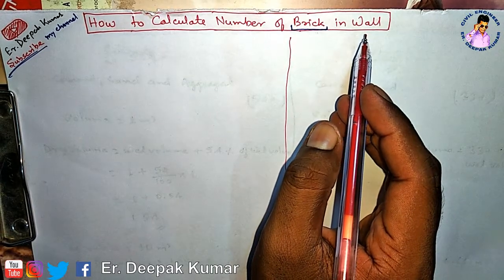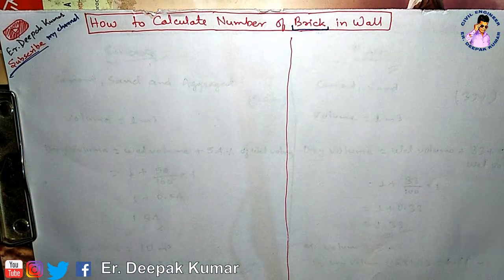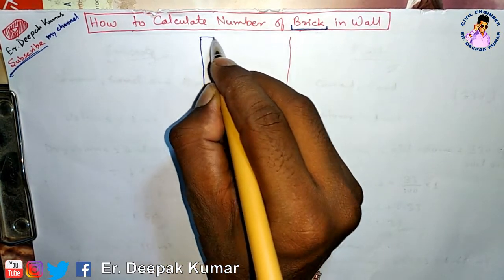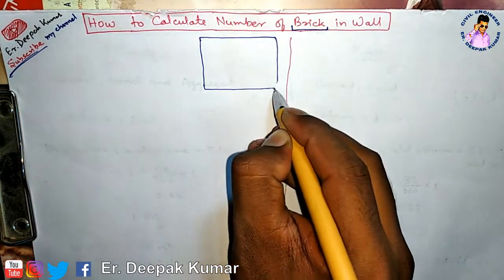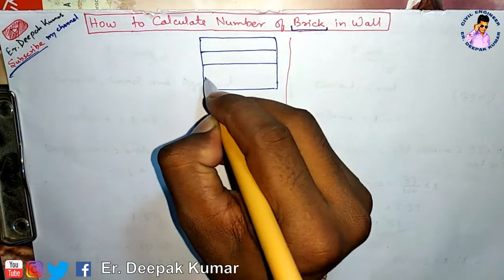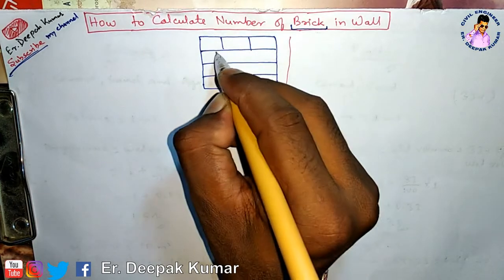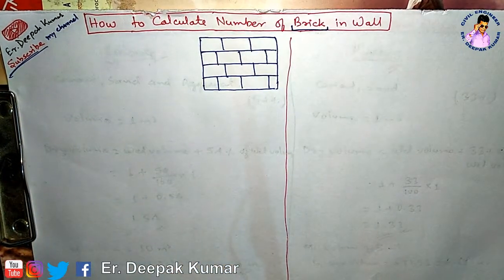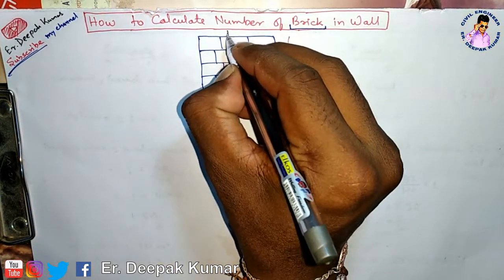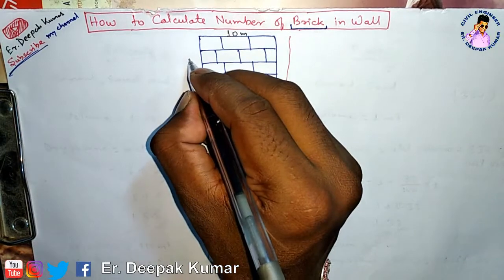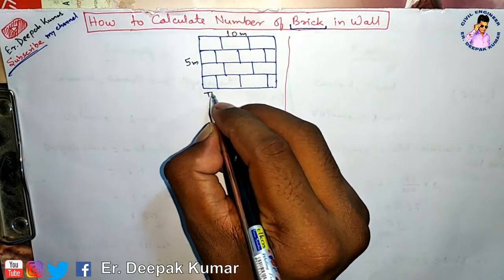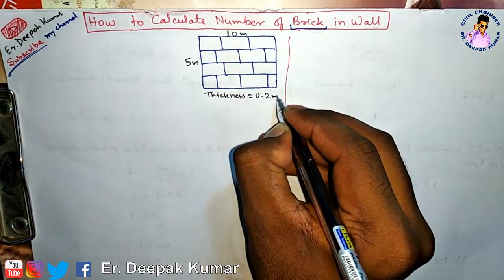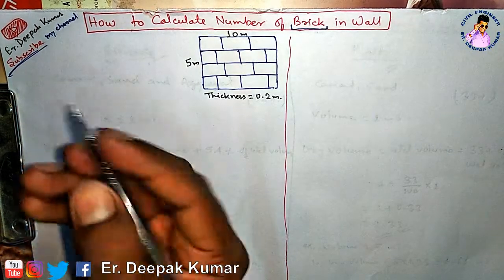First, we have to take a wall. This is the wall. In this wall, its length is 10 meter, height is 5 meter, and thickness is equal to 0.2 meter.